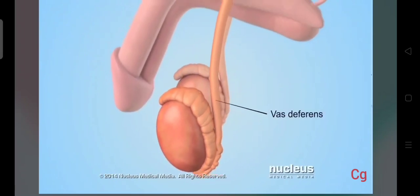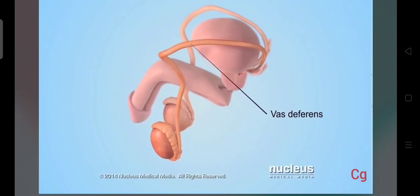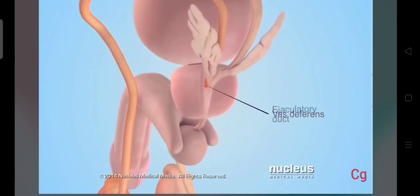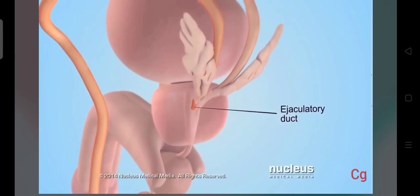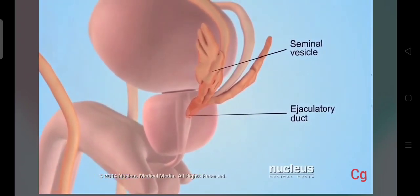During sex, sperm travel through a tube attached to the epididymis called the vas deferens, to another tube called the ejaculatory duct. There, sperm mix with fluid from two glands called seminal vesicles.